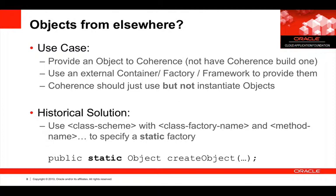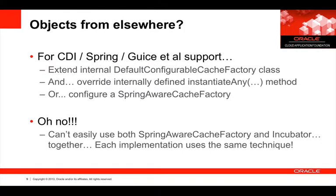While this works as a solution, it means you have to create a special class for each instance where you're doing this. Firstly, using statics can make testing a little difficult, especially inside containers. Secondly it creates effort for the developer. Alternatively, some people have extended the internally designed DefaultConfigurableCacheFactory class. In editions prior to 12.1.2 this really is an internal class used inside Coherence to determine how to instantiate objects and get caches. To do this you really have to know about Coherence internals and typically override the instantiateAny method.